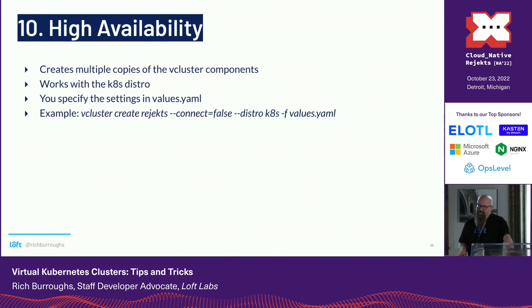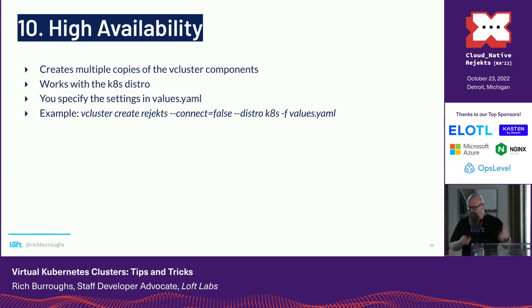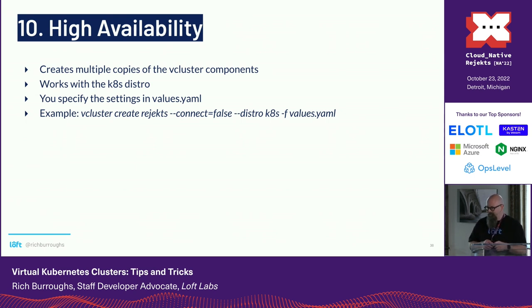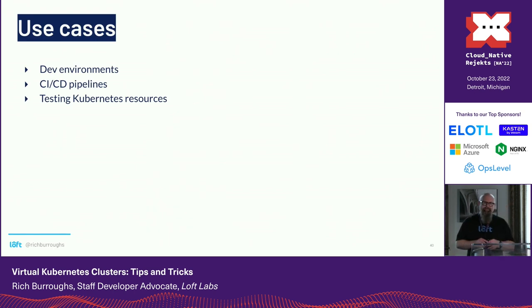Number ten: high availability. When we started with virtual clusters, we were thinking about dev and ephemeral environments, but people are starting to use vCluster for things I would call production. Some of them wanted high availability. There is now an option to create multiple copies of the vCluster components. This works with the Kates distro — you can't use it with the others. You specify the settings in the values.yaml file. On the command line, specify the distro and point it at that file, then specify the number of replicas you want for the different components.